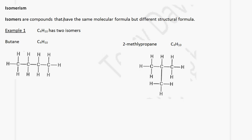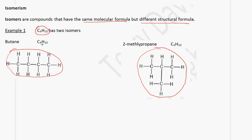Isomerism. Isomers are compounds that have the same molecular formula but different structural formula. This means that several compounds can have the same molecular formula, but when you draw the displayed formula, there are different forms. For example, look at C4H10 — it is butane, and we can draw it as a straight-chained hydrocarbon. Or we can draw it as a branched hydrocarbon, called 2-methylpropane. Both have the formula C4H10 but are structured differently.